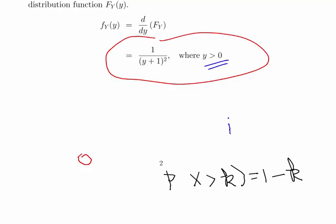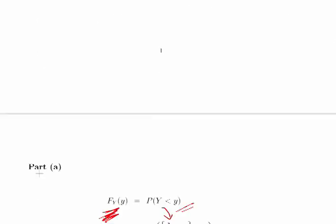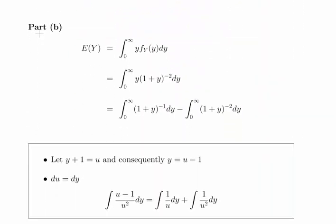Just remember to put this in at the end where y is greater than 0. You're told that in the question there somewhere. Just don't forget that bit. The second part is we have to show that the mean of Y does not exist.